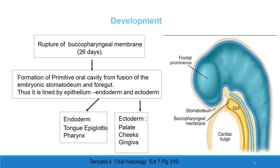Development. Formation of the primitive oral cavity from the fusion of embryonic ectoderm and from the embryonic stomodeum and foregut occurs by the rupture of the buccopharyngeal membrane on the 26th day. Thus, this lining is formed by endoderm and ectoderm.